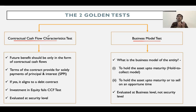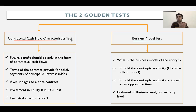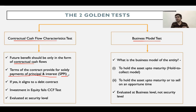Under the contractual cash flow characteristics test, as an entity you should ask: when I'm purchasing this financial asset, what is the future benefit I'm actually going to get? If the future benefit is only contractual cash flows, this test is said to have passed. Specifically, these contractual cash flows are nothing but payments solely of principal and interest. This is also referred to as the SPPI test — solely payments of principal and interest.